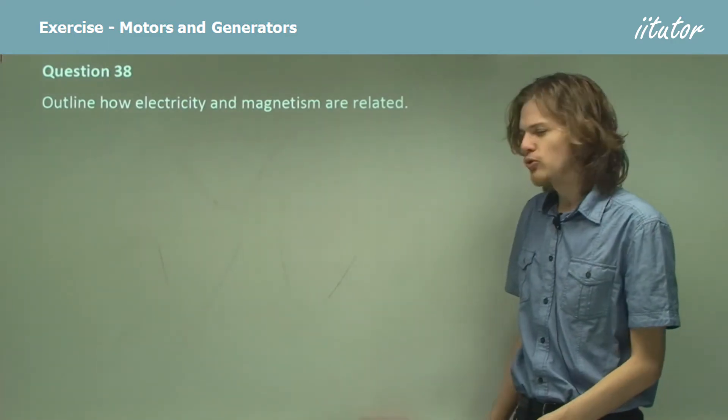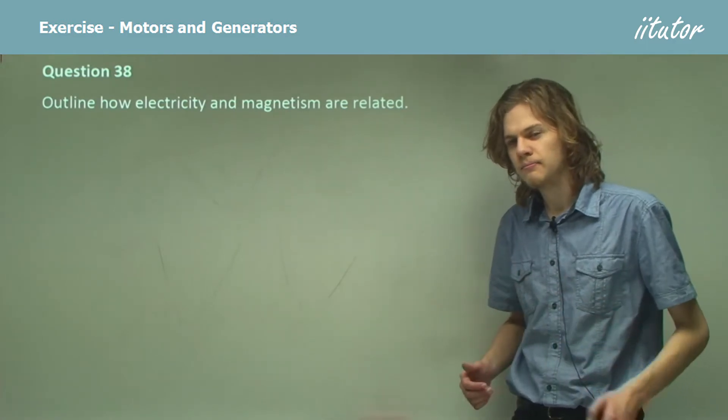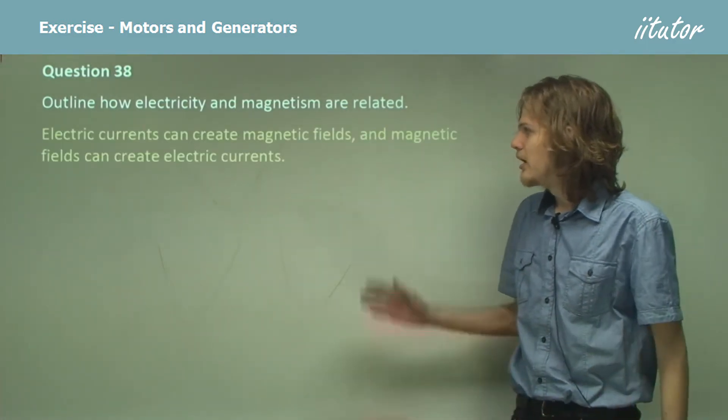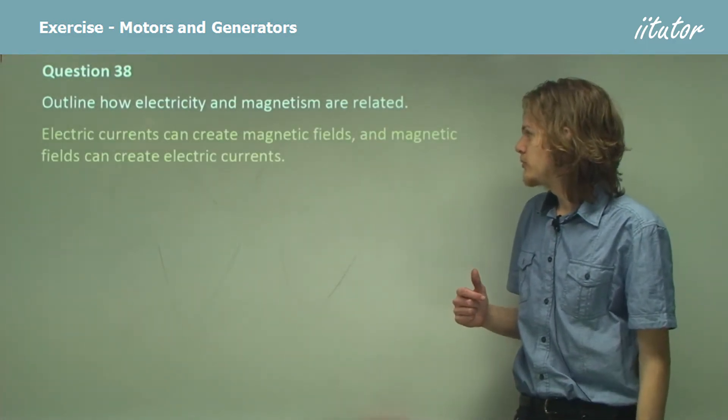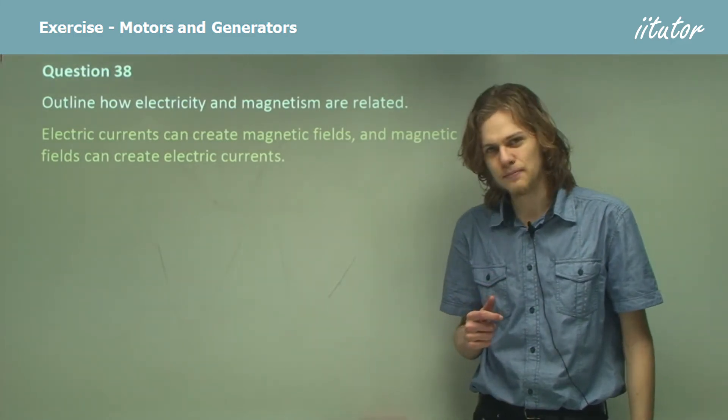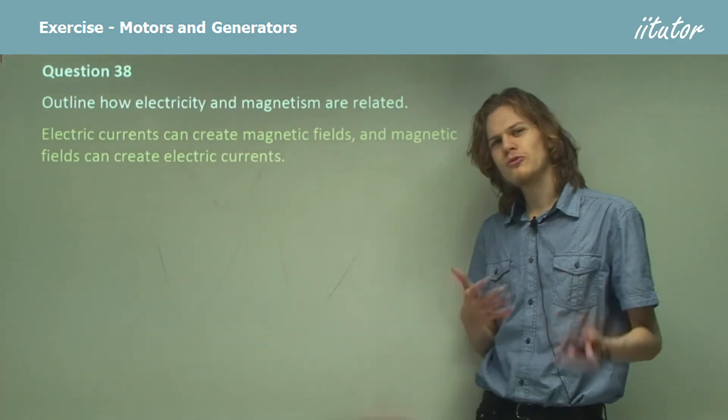We can talk about this in terms of magnetic fields and electric currents. Electric currents can create magnetic fields, and magnetic fields can create electric currents. They're pretty similar.